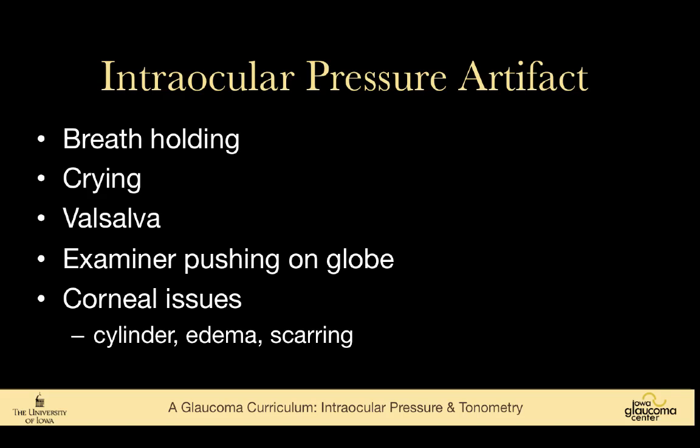It's easy to push on the globe, particularly in a very large eye such as a highly myopic or buphthalmic eye. Anything that affects the cornea can affect the Goldman intraocular pressure measurement — including astigmatism, edema, and scarring.